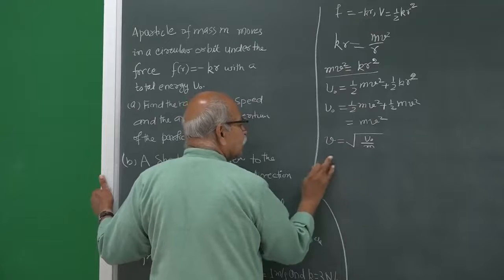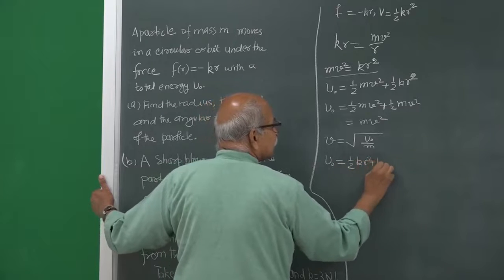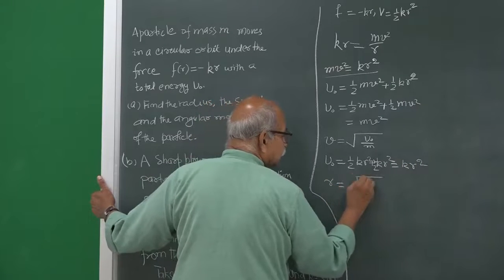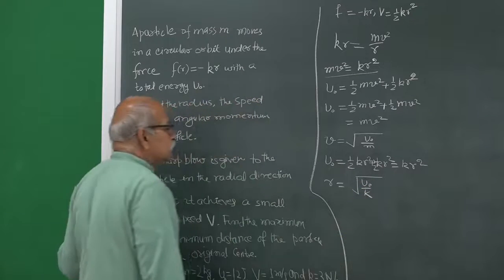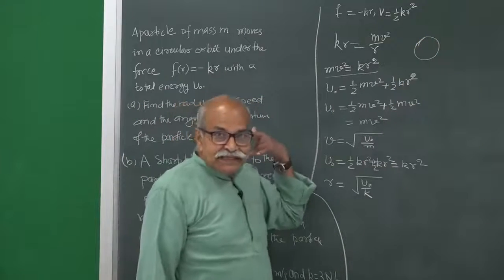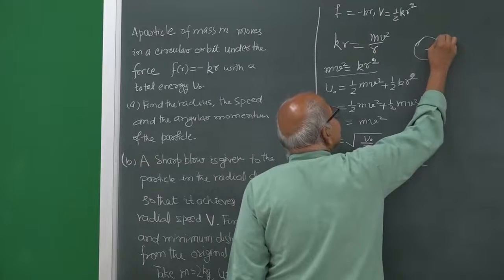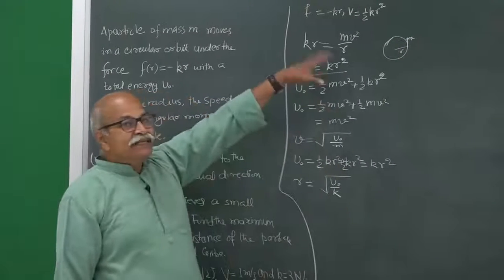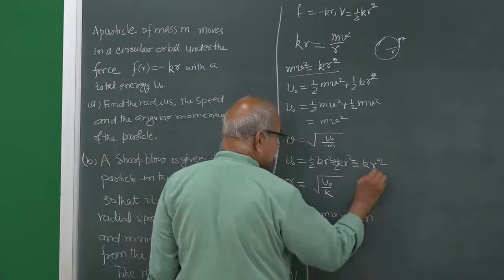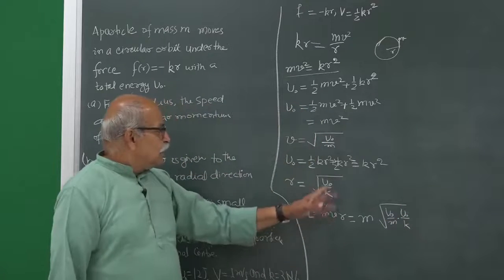For the radius, we write u_naught equals half k r squared plus half k r squared, which equals k r squared, and so r equals the square root of u_naught by k. For angular momentum, the particle is going in a circle and the angular momentum is about the center of the circle. If this is the radius and the velocity is in the tangential direction, then L equals m times v times r.